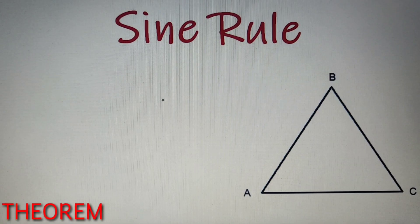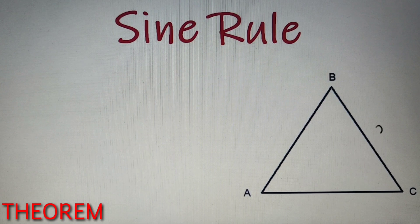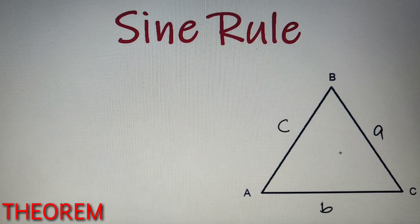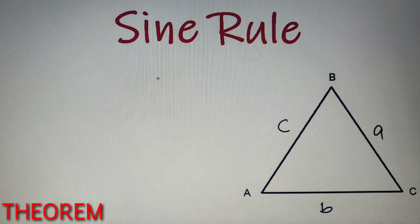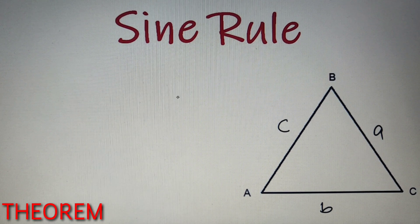Let us first discuss the theorem for the sine rule. For that we have taken a simple triangle ABC and the lengths of the sides will be A opposite to the angle A, B opposite to the angle B, and C opposite to the angle C. So the theorem of the sine rule is as follows: the sides of a triangle are proportional to the sine of angle opposite to them.